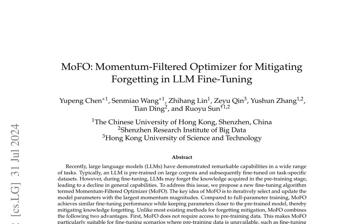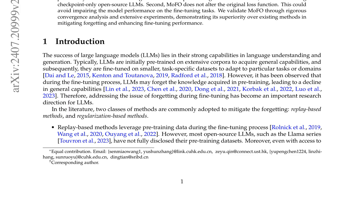The momentum term M_t is computed as the exponential moving average of the gradients. The filtering term F_t is computed as the cosine similarity between the gradients of the pre-training and fine-tuning tasks. The update rule combines the filtered momentum term with the gradients of the fine-tuning task. The authors also provide a theoretical analysis showing that MOFO can effectively mitigate forgetting by balancing the model's updates between the pre-training and fine-tuning tasks.